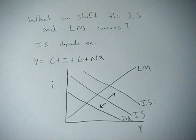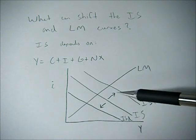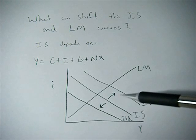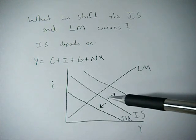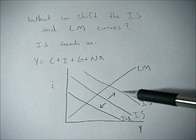And finally, we have net exports. So generally with net exports, if exports increase for any reason, but generally due to currency depreciation or the rest of the world getting richer, we see this IS curve shift right.